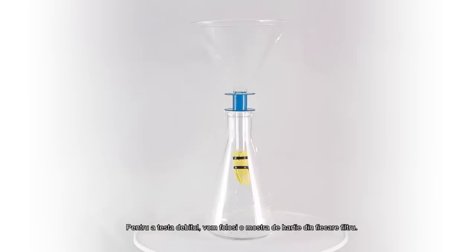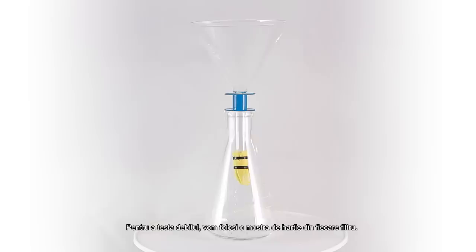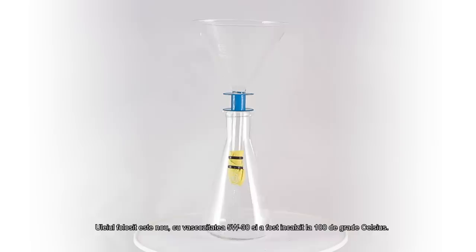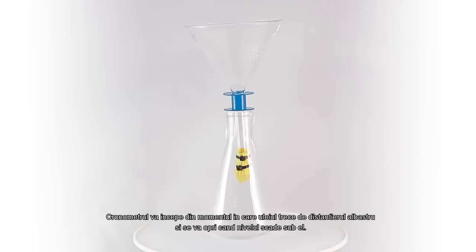We'll see the flow performance in the next test. In order to test the oil flow we'll do a short experiment using a paper sample from each filter. This sample will be tied at the end of a funnel and 100 milliliters of oil will be poured in it. The oil used is new and is 5w30 and was heated to exactly 100 degrees Celsius. The timer will start when the oil reaches the blue spacer and will stop when the oil level goes under the spacer.